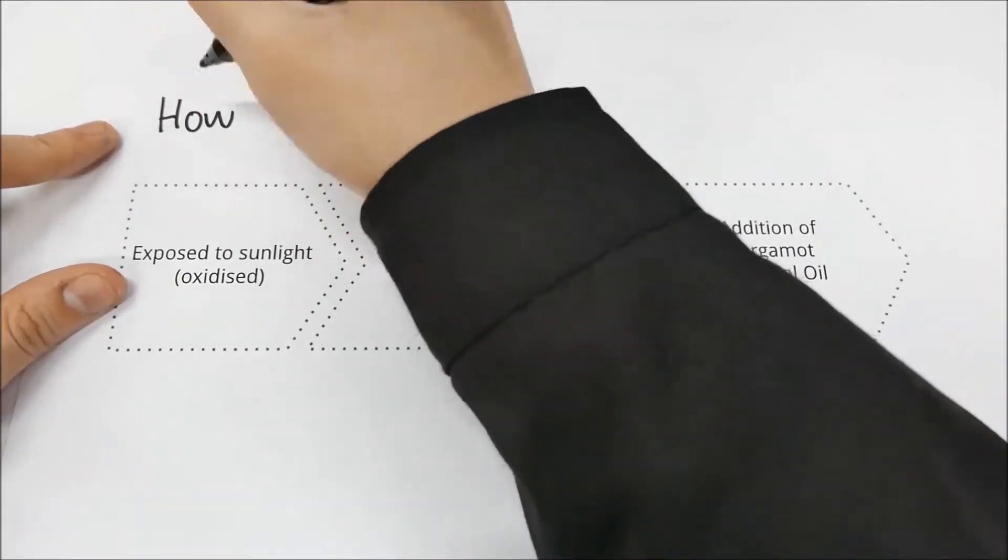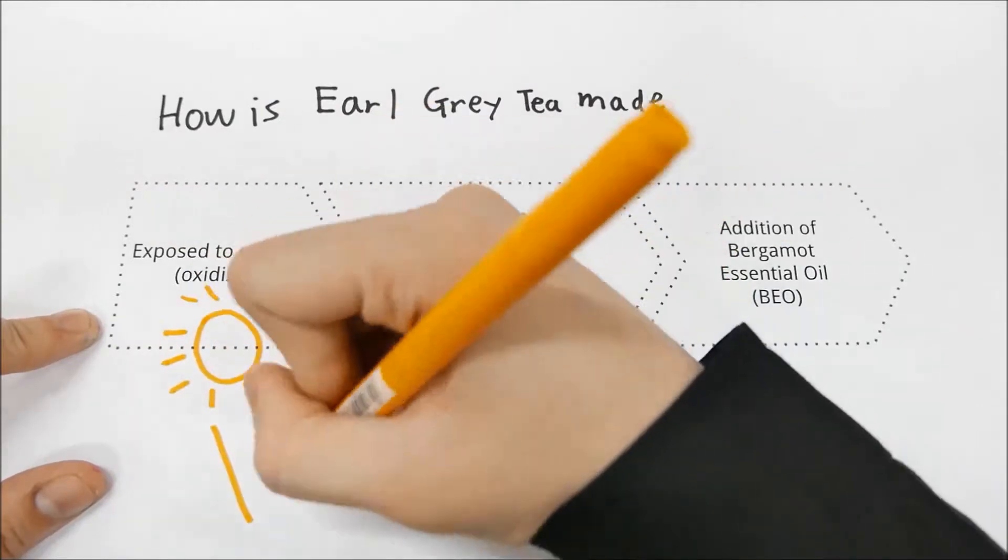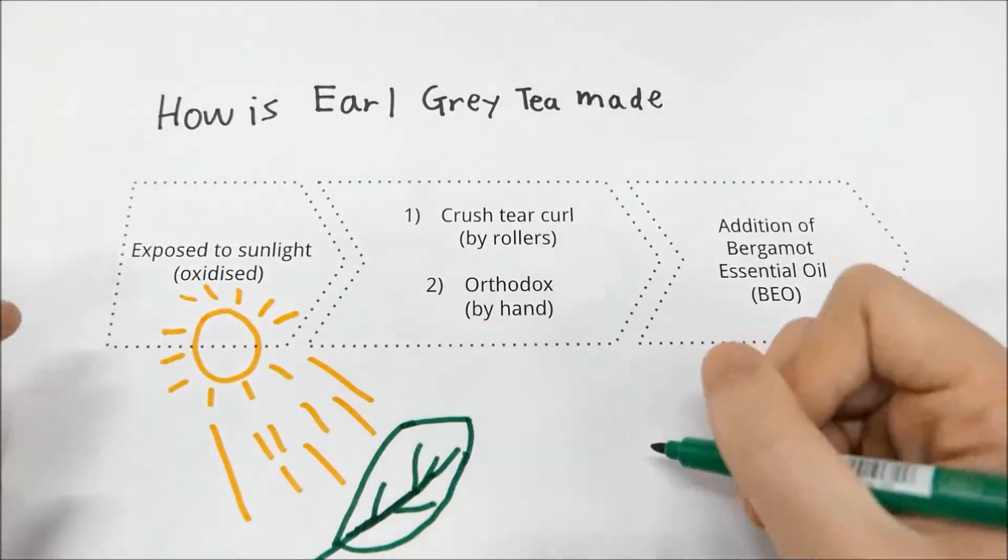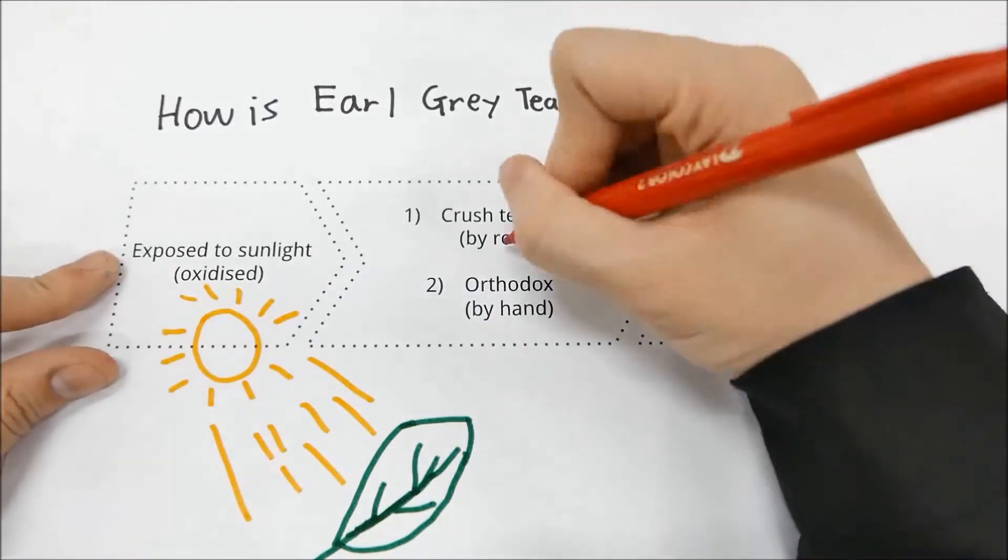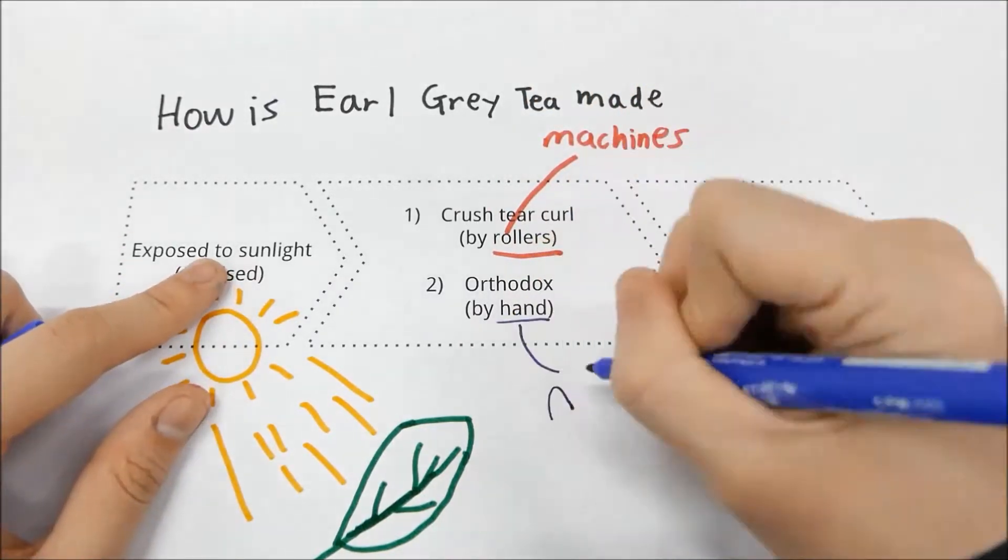To gain a better understanding of this, we will now look into how Earl Grey is being made. It is first exposed to sunlight, where it is left to oxidize. Following which, its tea leaves can then be prepared via crush, tear, curl method involving the use of machines, or orthodox method whereby it is made by hand.